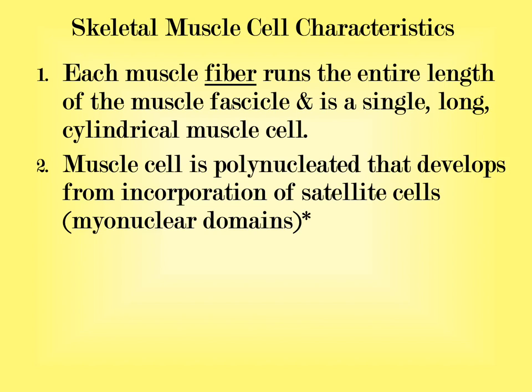Those myonuclear domains, in terms of that ratio, will stay consistent — meaning that as the cell gets larger, we keep the myonuclear domain ratio stable by adding myonuclear domains to match the fiber diameter. If the muscle is lost due to atrophy, the myonuclear domains will stay unless the fiber becomes too small, at which point we lose the myonuclear domains and the muscle cell will not be able to grow after that.